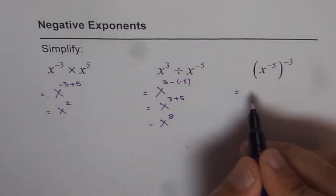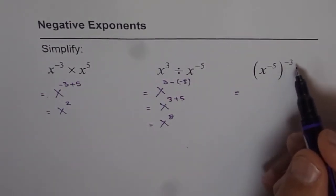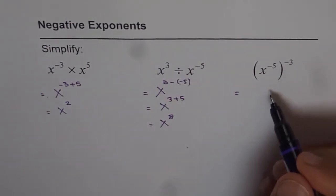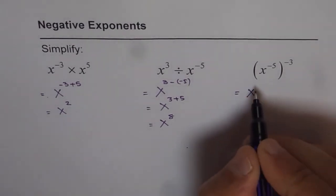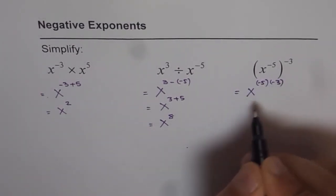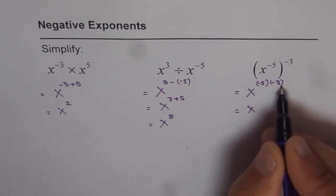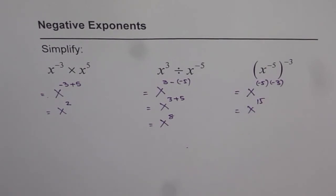And the last one is power of a power. So whenever we have power of a power, the exponents get multiplied. Therefore, in this case, we get x to the power of -5 times -3. Minus times minus becomes positive, so 5 times 3 is 15. So x to the power of 15 is our answer. I hope that's a quick review of the laws of exponents.